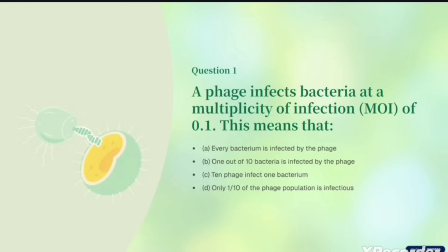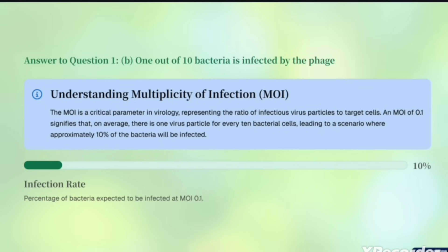This means most of the bacteria will remain unaffected. The correct answer is that only 1 out of 10 bacteria is infected by the phage, because the MOI is 0.1.